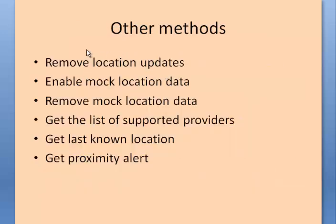There are other methods available. You can use remove location update to stop receiving location updates. You can enable mock location, which lets you spoof your location — for example, if you are in Chennai India, you can program your Android mobile to report your location as Newark, USA, and whenever someone requests your location it will return Newark USA. You can also get the list of supported providers, get your last known location, and set proximity alerts to be notified when you are close to a favorite place.